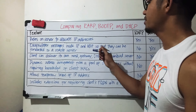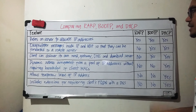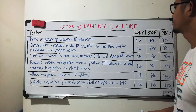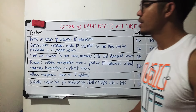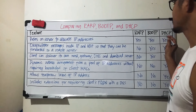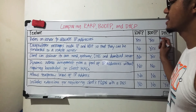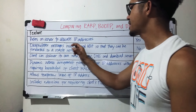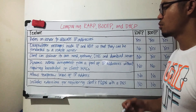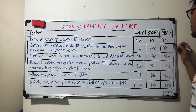I've got a table here with features compared across RARP, BOOTP, and DHCP. First feature: relies on a server to allocate IP addresses — RARP, BOOTP, and DHCP all have this feature, so all yeses. Second feature: encapsulates messages inside IP and UDP so they can be forwarded to a remote server — RARP doesn't have this, but BOOTP and DHCP do.